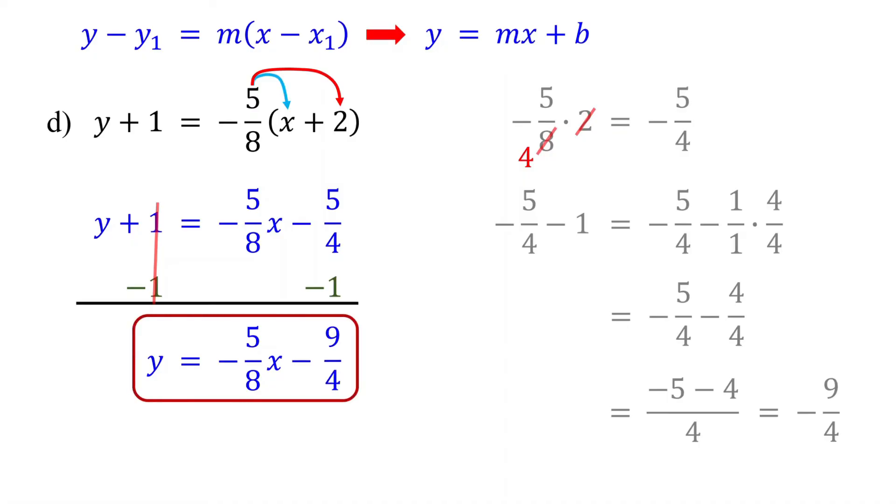Now, we have the equation in slope-intercept form, with a slope of negative 5 eighths, and a Y-intercept of negative 9 fourths. If you want to avoid adding and subtracting fractions, instead of subtracting 1, you can eliminate the fractions first.